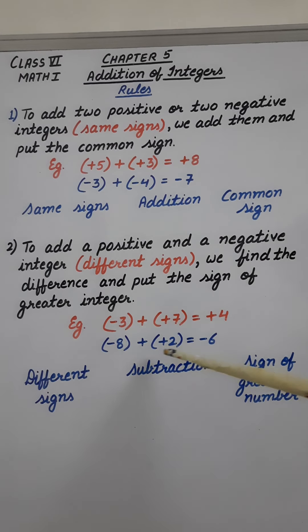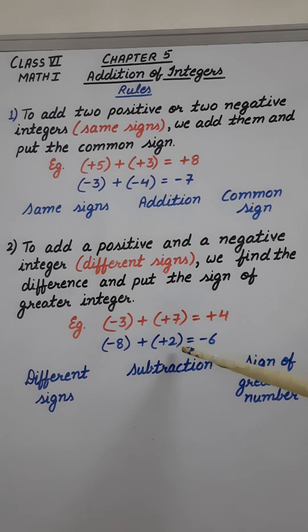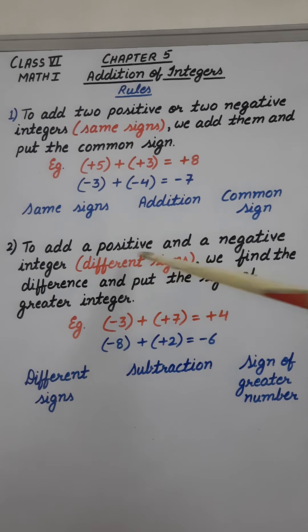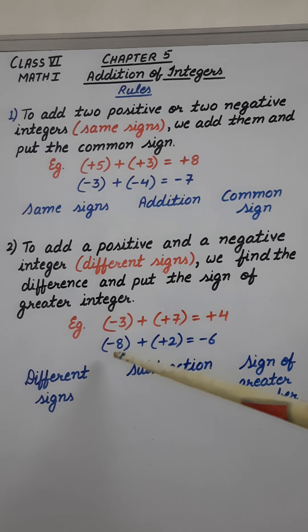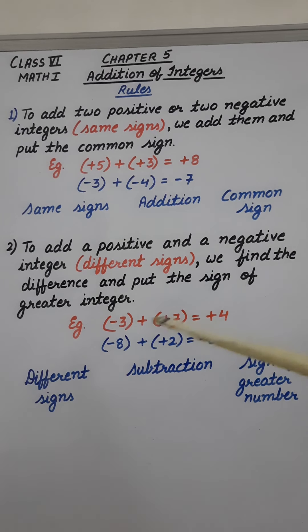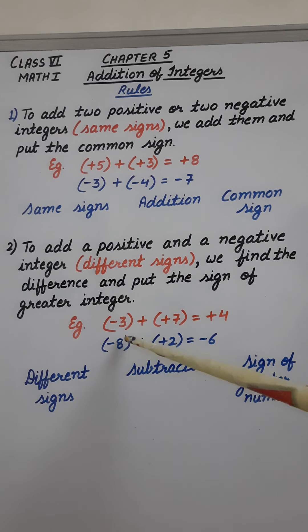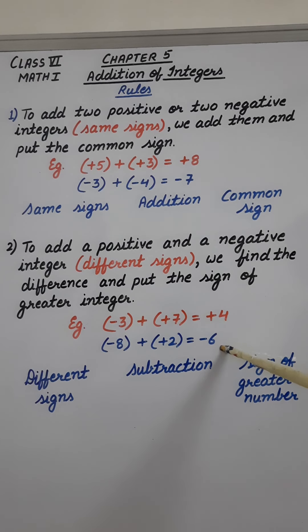Similarly, one more example: minus 8 plus plus 2. Again, these two integers have different signs — one is minus, one is plus. So we have to do subtraction. On subtraction the result is 6. Now which sign will come? The sign of the greater integer, which is 8, and 8 has a minus sign. That is why the answer is minus 6.